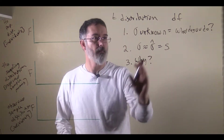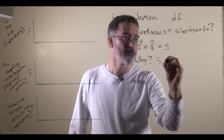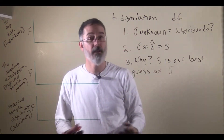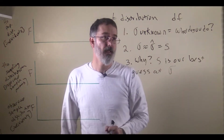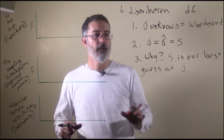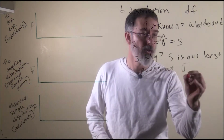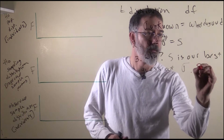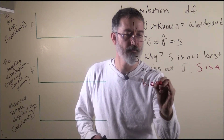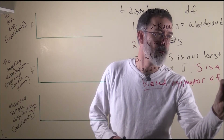Why is the sample standard deviation a good guess? Without any other information, we would not have any reference point. So that is what we are going to use, because we do not have anything better. However, there is a problem: S is a biased estimator of the population standard deviation.